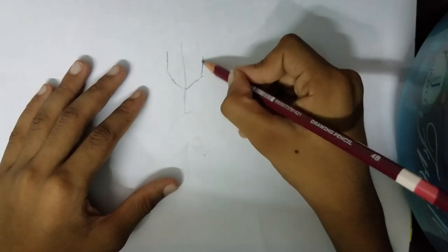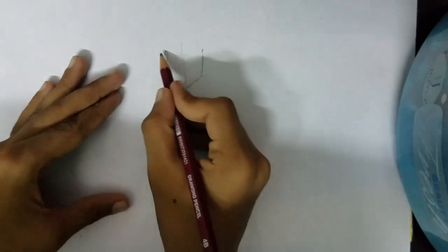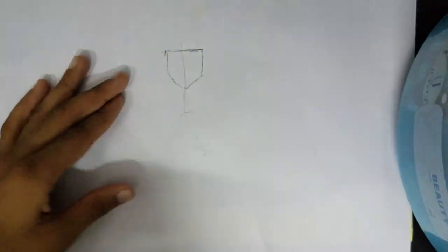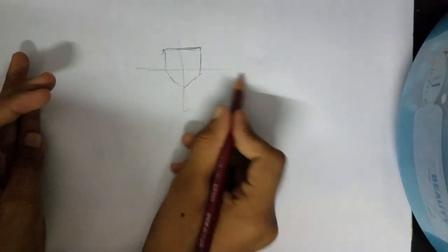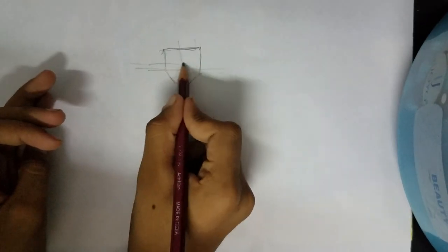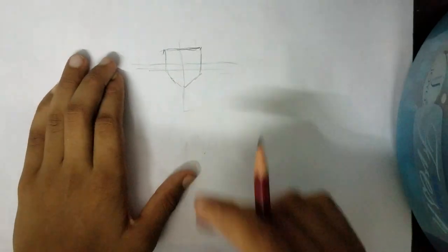Then close it up, something like this. Now a circle in the middle and one more circle, making it look like this.